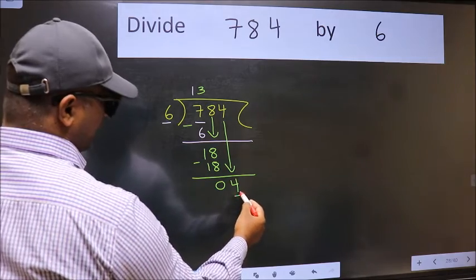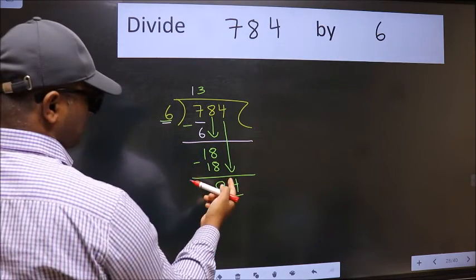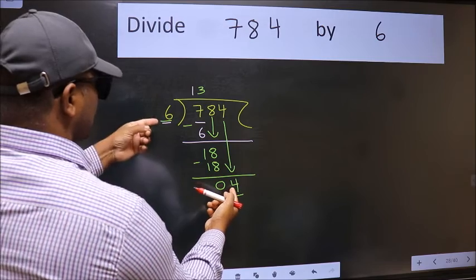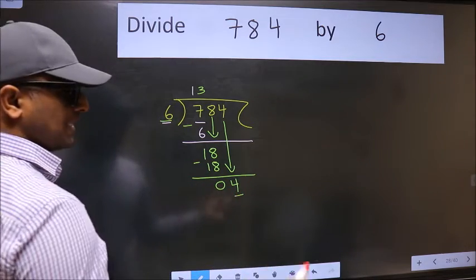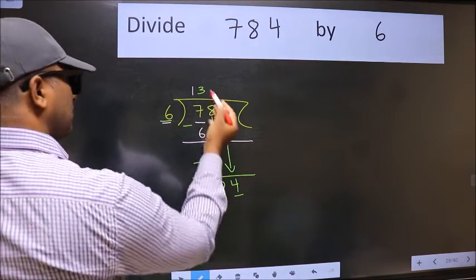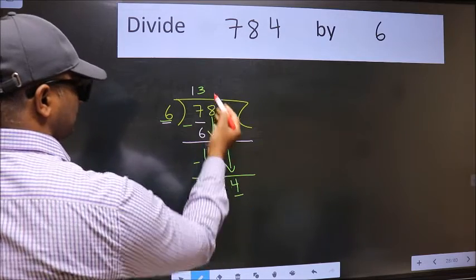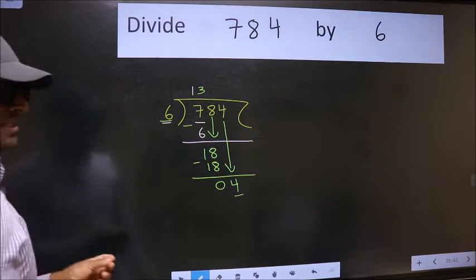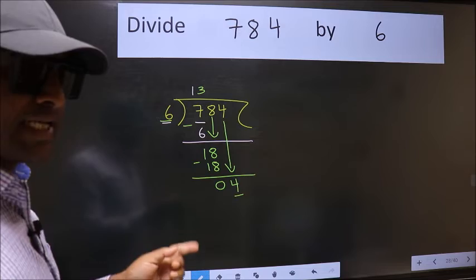Here we have 4 and here 6. 4 is smaller than 6. So what many do is, they directly put dot take 0. Which is wrong.